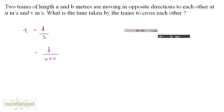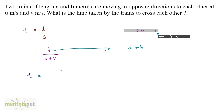Now we have to calculate the distance. Let us assume that this is the meeting point of the trains. The train moving to the right, which is a meters long, will have to travel a meters in order to cross this blue point. And the train which is b meters long will have to travel b meters in order to cross the blue dot. So the effective distance traveled by both the trains is the addition of their lengths, a plus b. So the time is equal to a plus b divided by the relative speed u plus v.